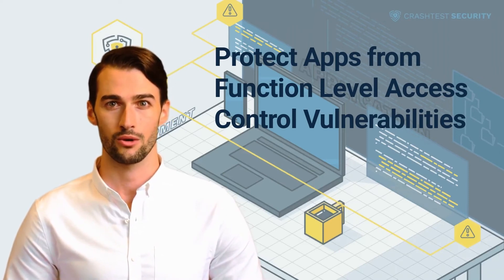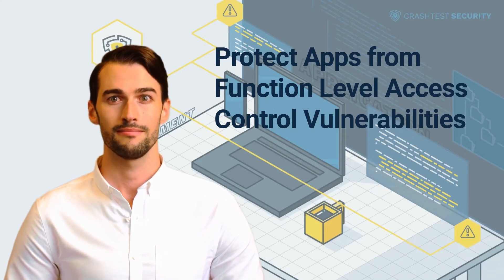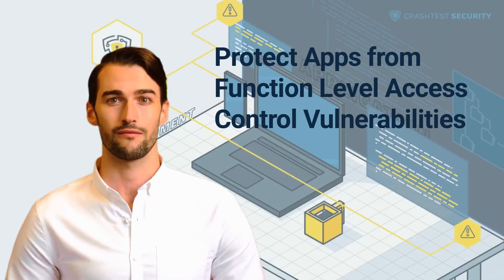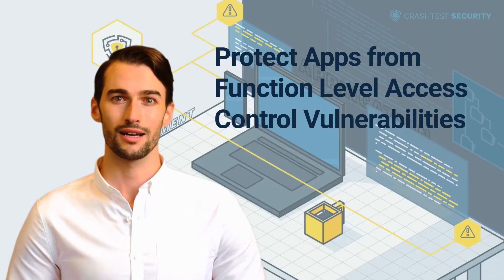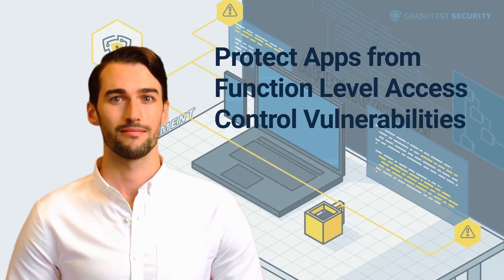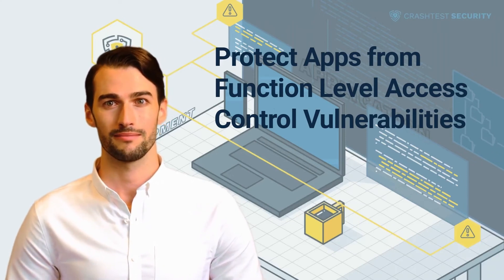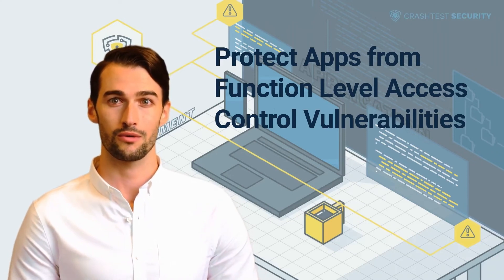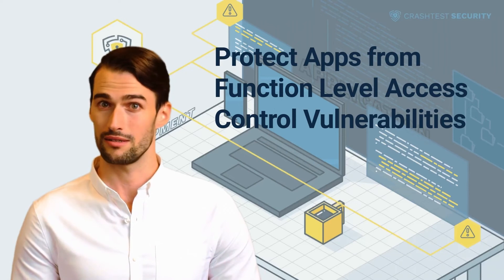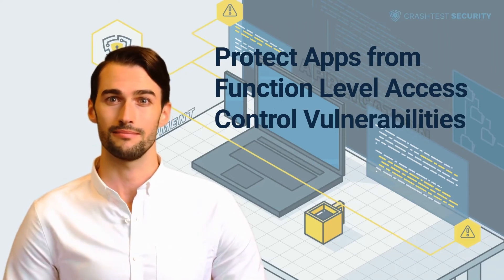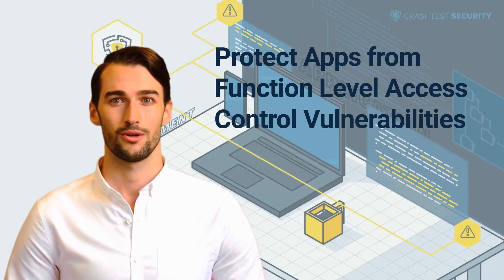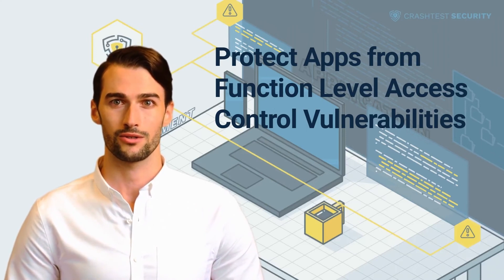Log access control events. Access control mechanisms should enforce the ownership of records, helping define the users that can access, modify, or delete records. Access control lists should be used to maintain and update these access control records. Developers should also enforce the recording of authorization failures and create alerts for repeated failures.